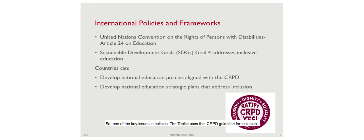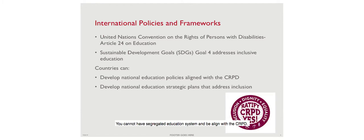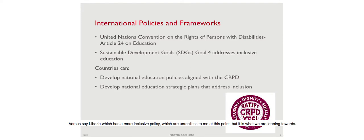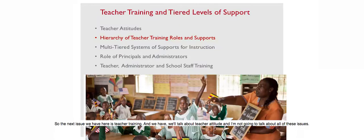The CRPD article on education states you cannot have parallel segregated systems and be aligned with the CRPD. In Ghana, for example, a policy was created that allows segregating children perceived as having a severe disability - that will be a problem down the road as it serves as a barrier and discrimination. Versus Liberia, which has a much more inclusive policy with national education strategic plans outlining progressive steps toward inclusion.